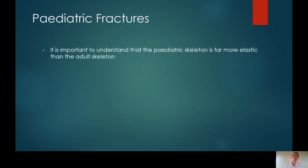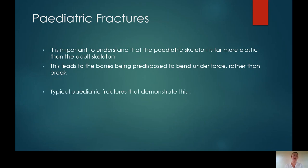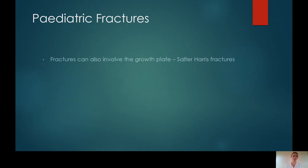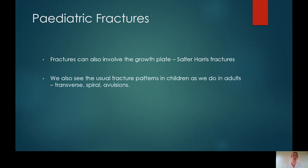The paediatric skeleton is far more elastic than the adult skeleton, which will lead to the bones bending rather than breaking. Typical paediatric fractures demonstrating this kind of fracture pattern include a buckle or torus fracture, a greenstick fracture, or bowing fractures — also known as plastic deformity fractures. Other paediatric fractures involve the growth plate: these are Salter-Harris fractures. You'll also see normal fracture patterns more accustomed to the adult skeleton, such as transverse, spiral or avulsion fractures.